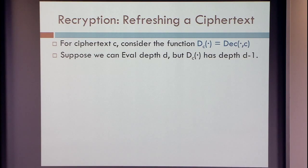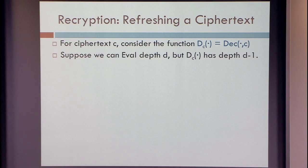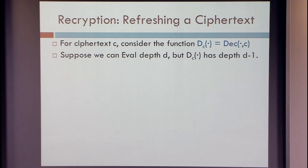So this is what we have so far. The idea of recryption is trying to refresh the ciphertext so as to reduce its noise. Take a ciphertext and think of the following function: the function has the ciphertext hardwired in it — it's not an input to the function. What is an input to the function is the secret key. It's going to take an input and try to use it as a secret key to decrypt that particular ciphertext. This is the function D sub-ciphertext. Suppose we have an evaluation capacity that can handle depth-d circuits.